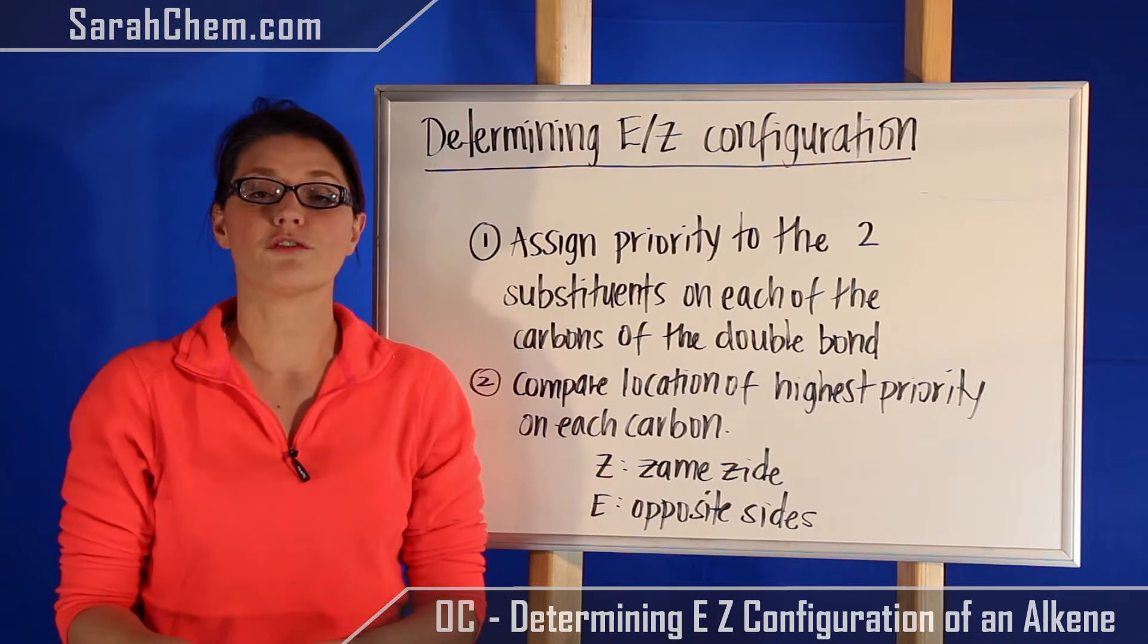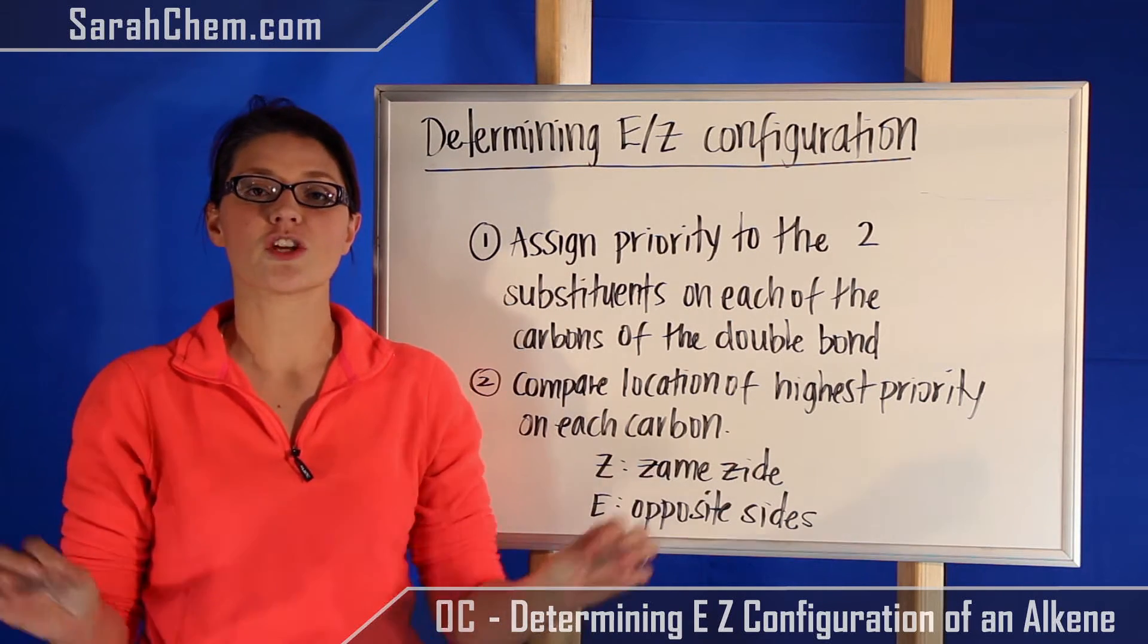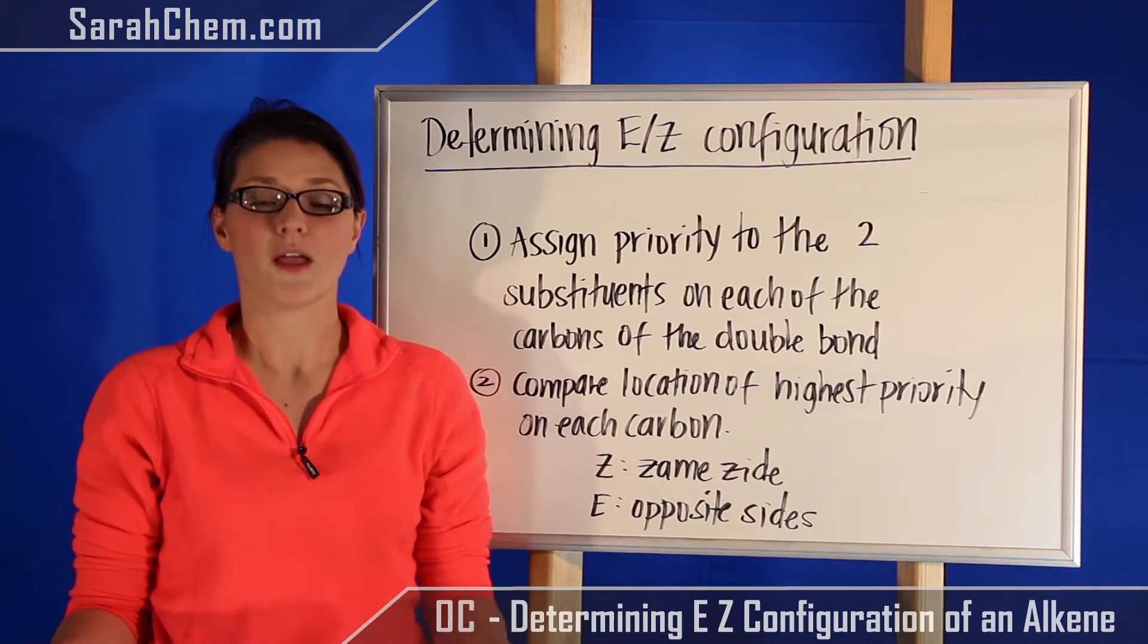The way that we assign priority is exactly the same as you would for an R/S configuration, meaning that you're going to look at the groups attached. Whatever has the highest atomic number, that is the one that will have the higher priority.